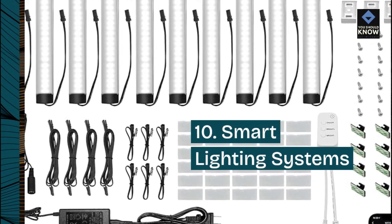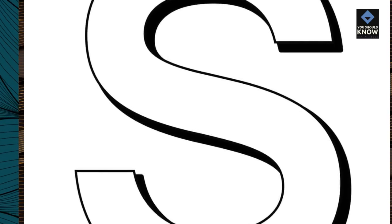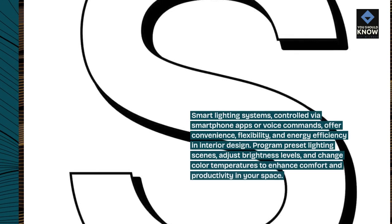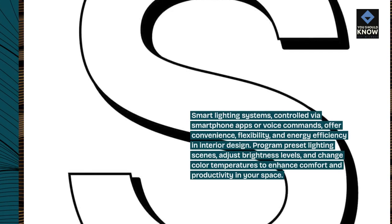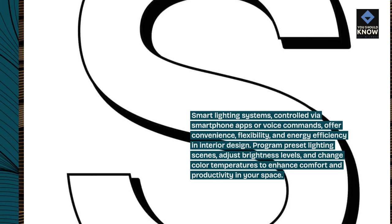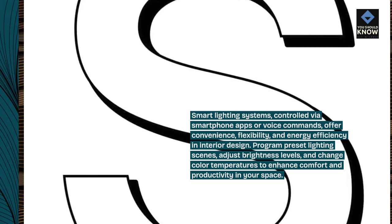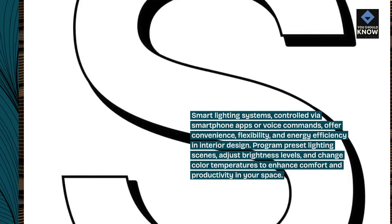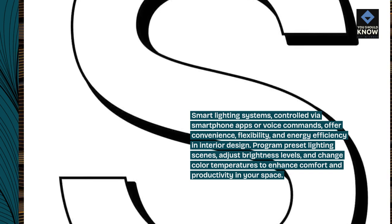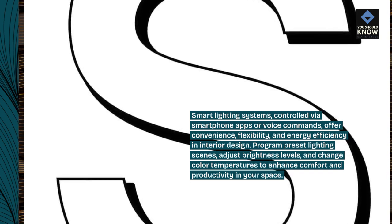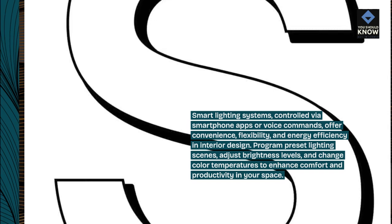Smart lighting systems, controlled via smartphone apps or voice commands, offer convenience, flexibility, and energy efficiency in interior design. Program preset lighting scenes, adjust brightness levels, and change color temperatures to enhance comfort and productivity in your space.